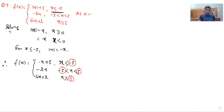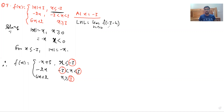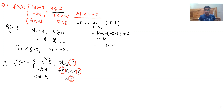At x equal to minus 3: LHL equals limit h tends to 0 of f(minus 3 minus h). We use the first piece and substitute x = minus 3 minus h to get limit h tends to 0 of minus(minus 3 minus h) plus 3, which gives 3 plus 3 equal to 6.